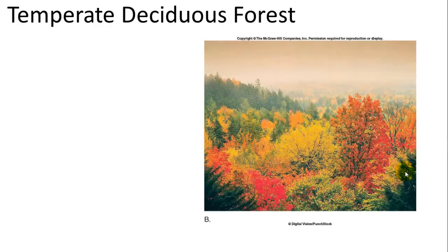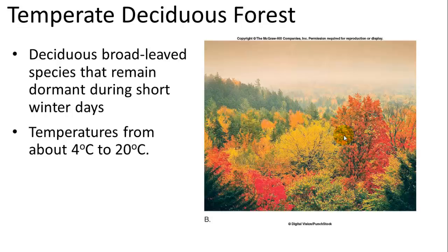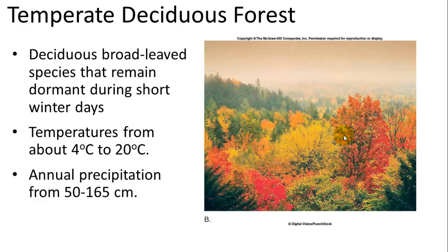Next, below the boreal forest, we have the temperate deciduous forest. These are generally deciduous, broad-leaved forest species that shed their leaves in autumn. Temperature ranges from 4 to 20 degrees Celsius and can dip below freezing as well. Annual precipitation is fairly high — 50 to 165 centimeters of rain — which mostly occurs in the summer months.